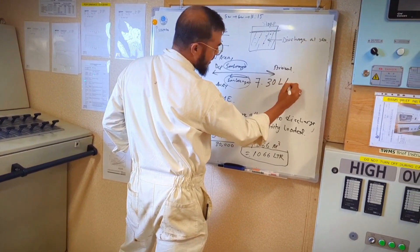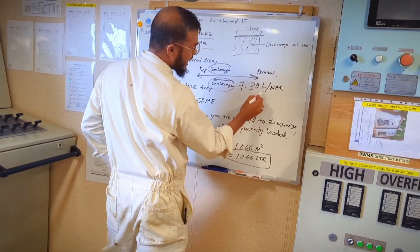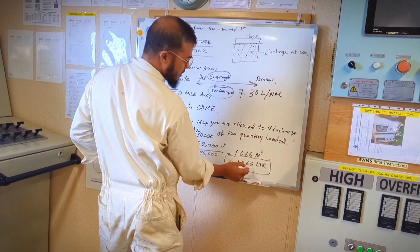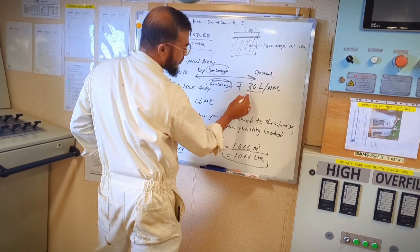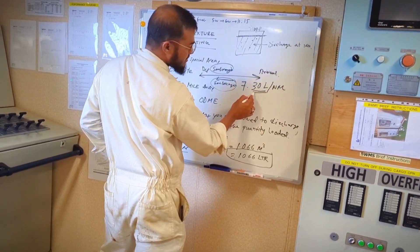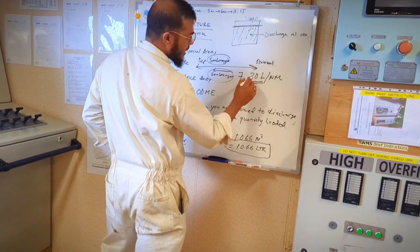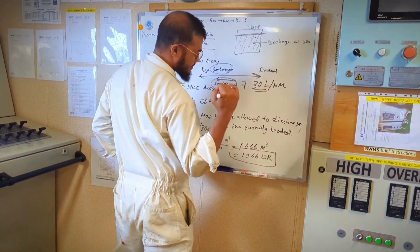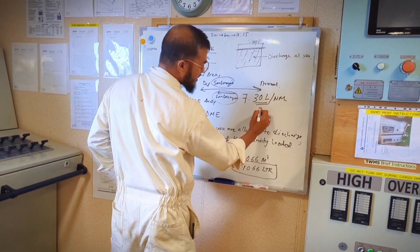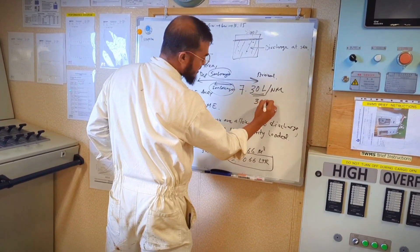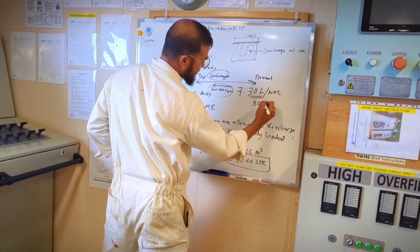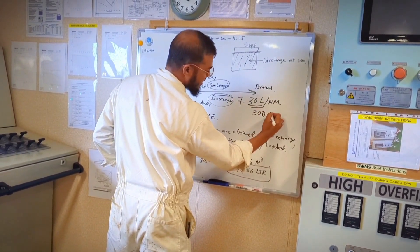So we can say 30 liter per nautical mile, that means you are allowed to dispose among this per nautical mile maximum 30 liter. And how it calculates as per this ODME - it calculates based on the PPM and it is allowed maximum 300 PPM, so roughly we can say 300 PPM.